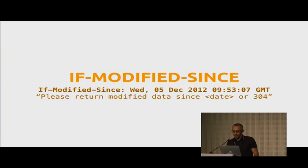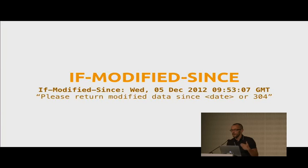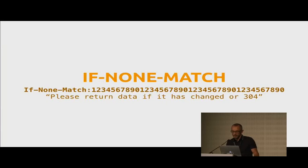Conditional requests: the client can send requests using the If-Modified-Since header, saying please return me the data from this endpoint only if it has changed. So we don't always get back the same data — on subsequent requests you get back only new data. If-None-Match is similar but uses ETags, and is mostly used on the item endpoint — for example, give me this person only if something has changed on it.